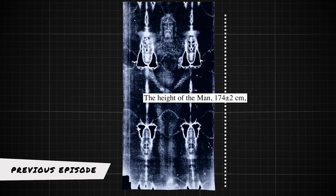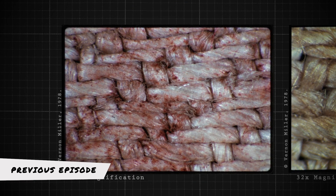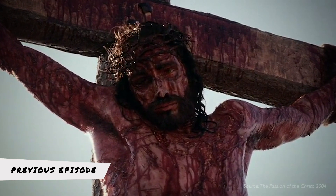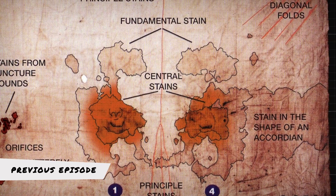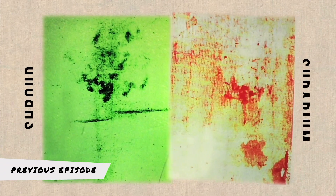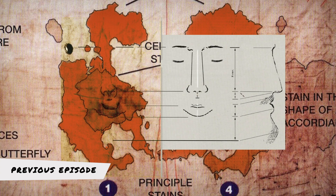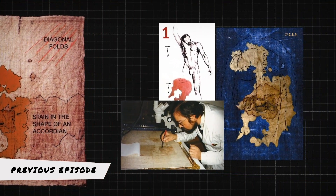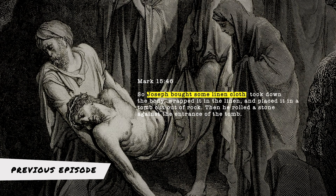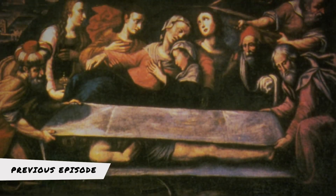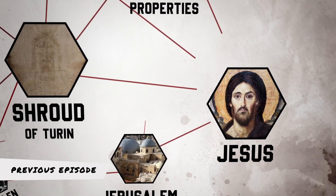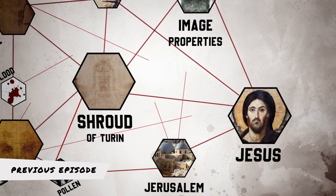In our previous episode about the Shroud of Turin, we analyzed the bloodstains present on the cloth and how they matched the Gospel accounts of Jesus' crucifixion. We also uncovered the surprising correlation between the Sudarium of Oviedo and the Shroud of Turin. The Sudarium of Oviedo is a face cloth that covered Jesus' face after his death on the cross, while the Shroud of Turin is believed to be the burial garment used to cover the entire body when Jesus was laid in the tomb. Both artifacts provide a valuable insight into the events surrounding the death of Jesus, making this discovery all the more fascinating.